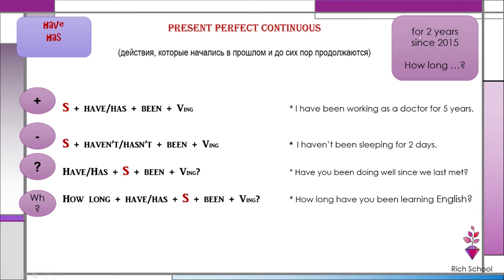Its time markers are 'for' and 'since.' You should use 'for' for some time expressions when you want to talk about a period of time — for example, 'for two years.' If you want to say from which point in the past it began, then you would use 'since.'